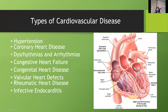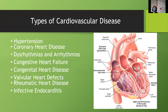The types of cardiovascular disease include hypertension, coronary heart disease, dysrhythmias and arrhythmias — we'll talk about the similarities and differences — congestive heart failure, congenital heart diseases, valvular heart defects, and connected to that, rheumatic heart disease and infective endocarditis.